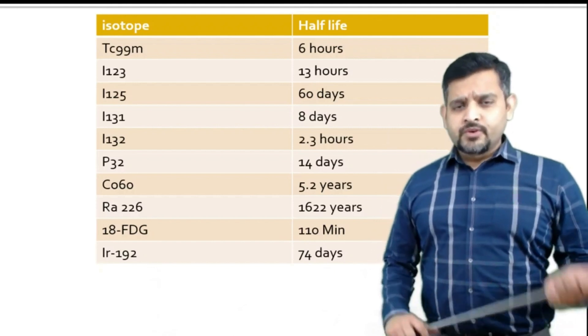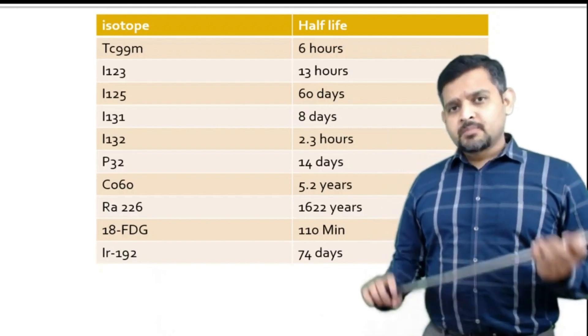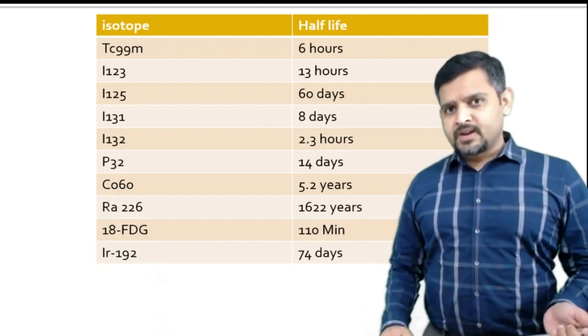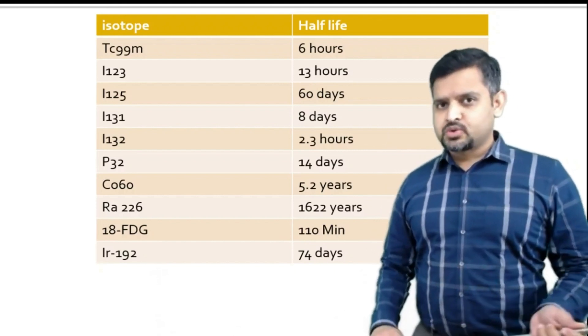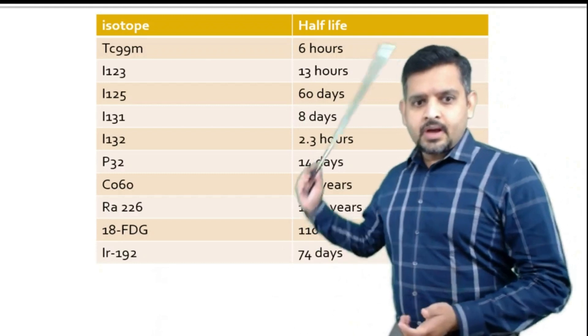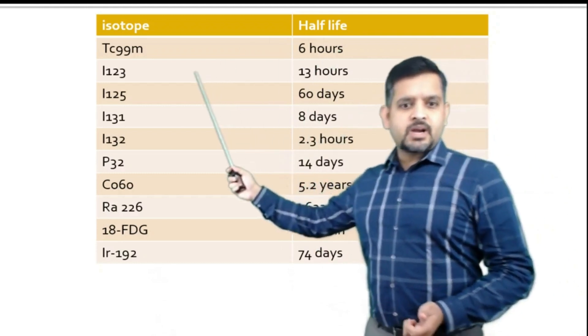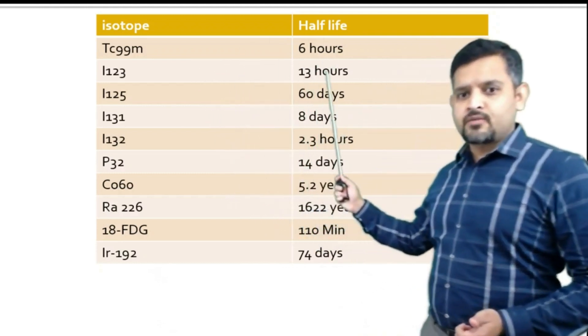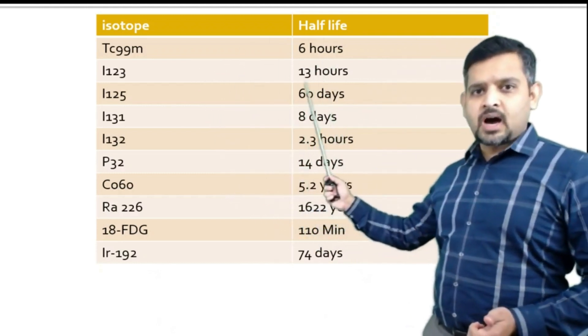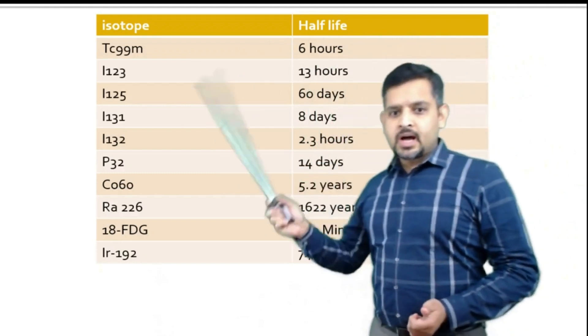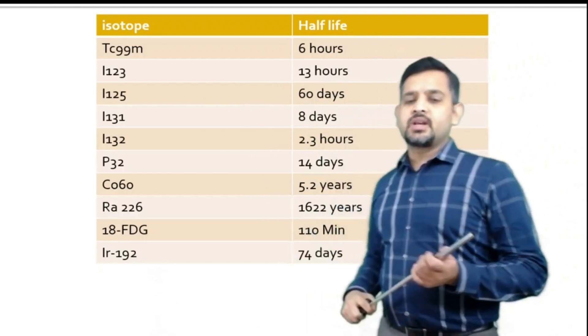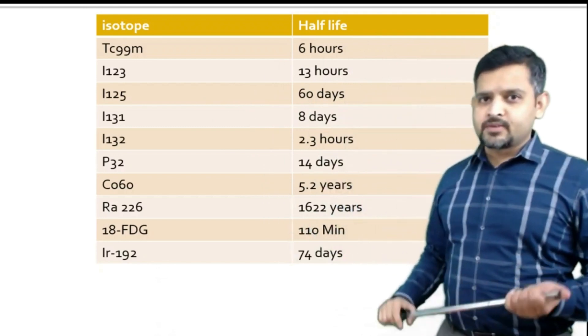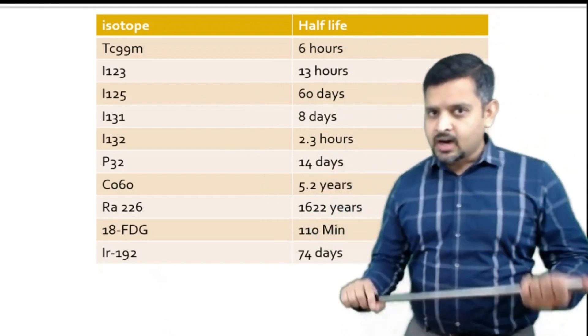In this video we will be learning important half-lives of radioisotopes. Technetium-99m has a half-life of 6 hours, and iodine-123 has a half-life of 13 hours.